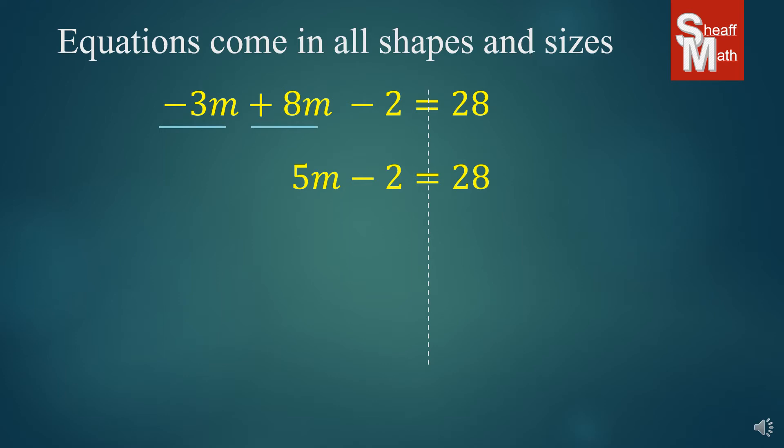And now we have a regular two-step equation. Add 2 to both sides, giving us 5m equals 30. Divide by 5 on both sides, giving us m equals 6.